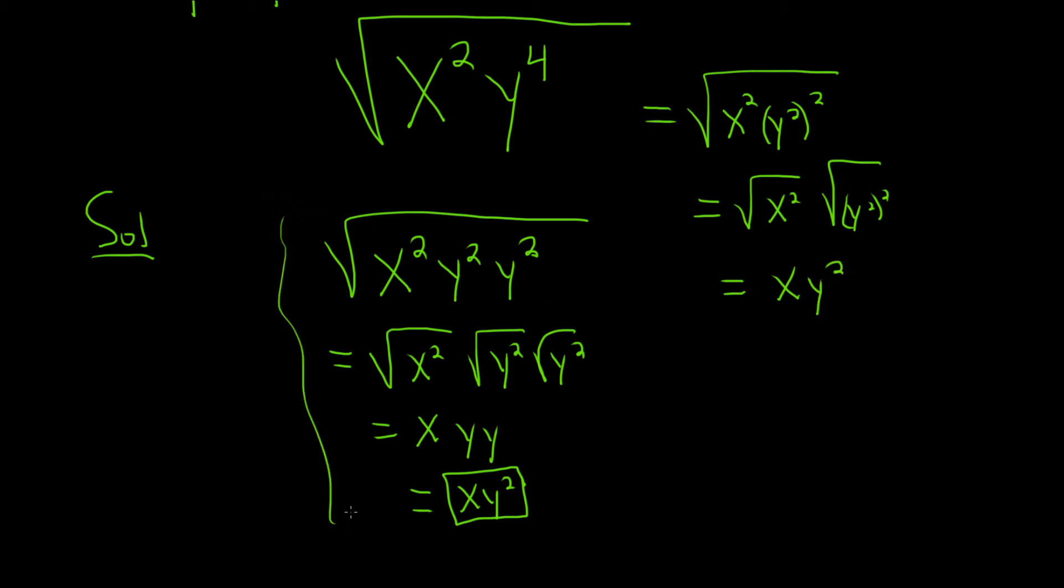I personally prefer this method here. It's a little bit more simplistic. It's a little bit more work, but it's less thinking because you know if you have a square root, you just write everything to the second power. If you have a fifth root, you write everything to the fifth power. I hope this video has been helpful.